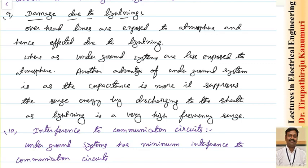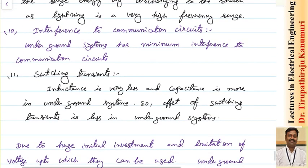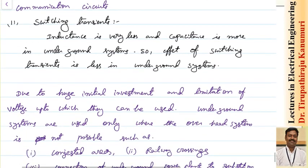Charging current: as conductors are very near to each other in underground systems, capacitance and hence charging current are more compared to overhead systems. Damage due to lightning: overhead lines are more affected due to lightning, whereas underground systems are less exposed. Underground systems have more capacitance, which suppresses surge energy by discharging to the sheath, so the effect of lightning is very less on underground cables.